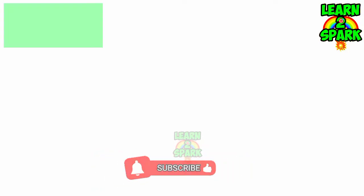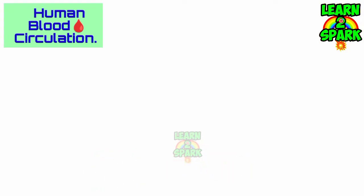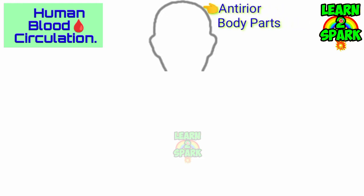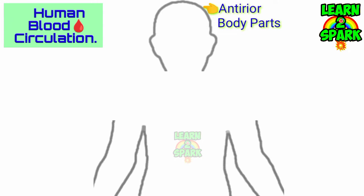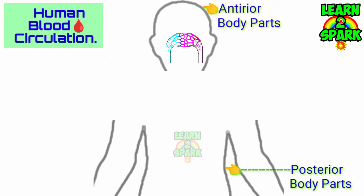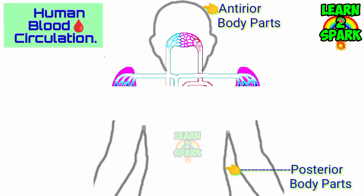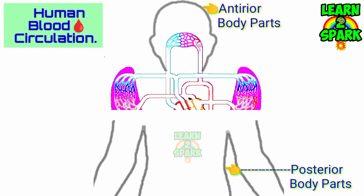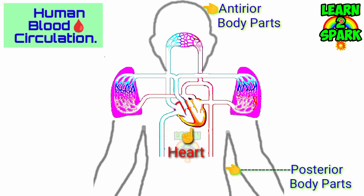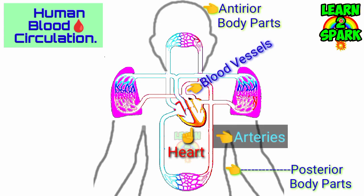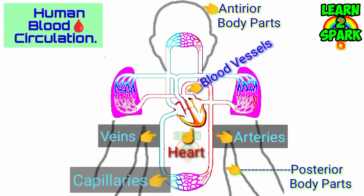Let's talk about human blood circulation which occurs throughout the body. The anterior or upper region of the body includes head, chest, and arms. The posterior or lower region includes abdomen and legs. The circulatory system mainly consists of the heart and blood vessels, which includes arteries, veins, and capillaries.